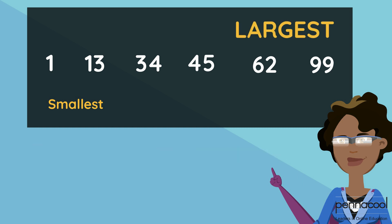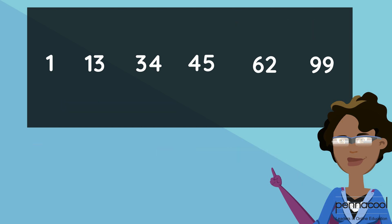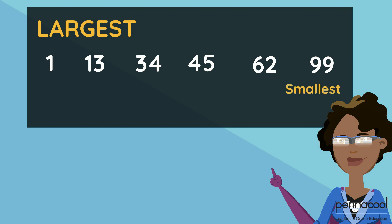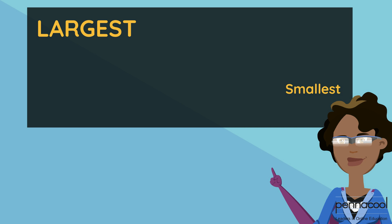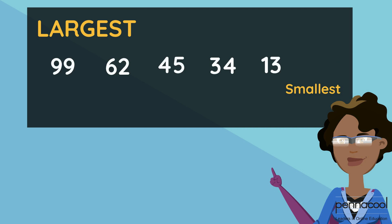Can you use these same numbers and arrange them from largest to smallest? It will go 99, 62, 45, 34, 13, and then 1.